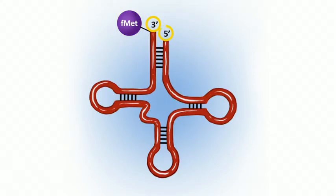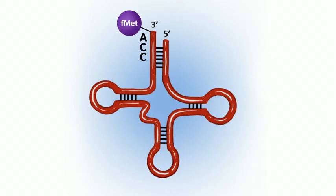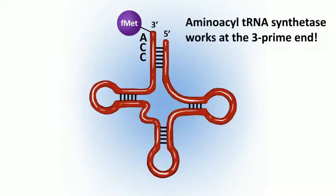A molecule of tRNA has a three-prime end and a five-prime end. The three-prime end is the hydroxyl end and it always ends with the sequence CCA — cytosine, cytosine, adenine. This is the end at which aminoacyl-tRNA synthetase works. So the amino acid is attached to the tRNA molecule at the three-prime end.